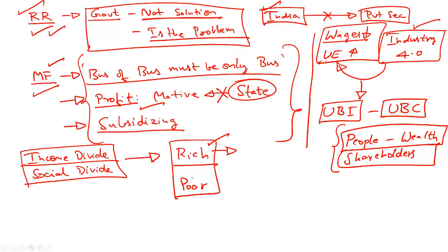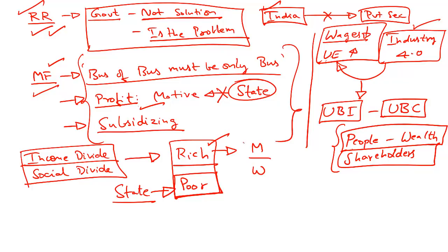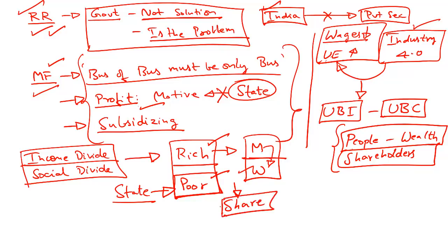The rich remain influential and powerful while the poor are left at the mercy of the state. Similarly, in an institution, workers are subjected to the whims and fancies of management. The author says that unless the poor and working class are given a share in society and institutions, human development cannot improve. That is why he advocates the universal basic capital model, under which people are owners of the wealth they generate — essentially shareholders.